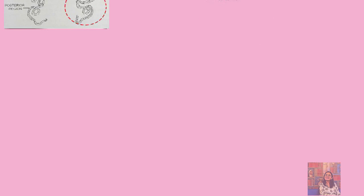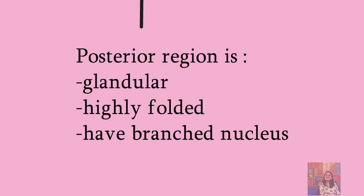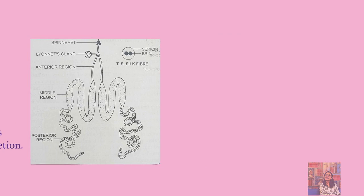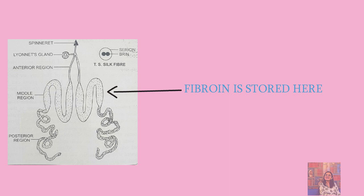First of all, we will talk about the posterior region. This is the posterior region — it produces silk. There are cells in the posterior region that produce a protein. We call it fibroin. The fibroin protein is secreted and it converts into fibrin, which is then stored in the middle region.